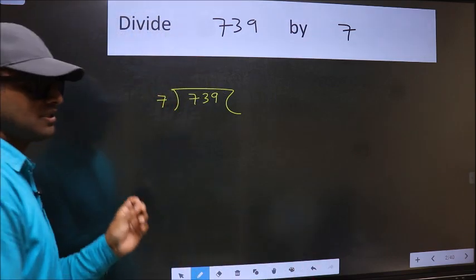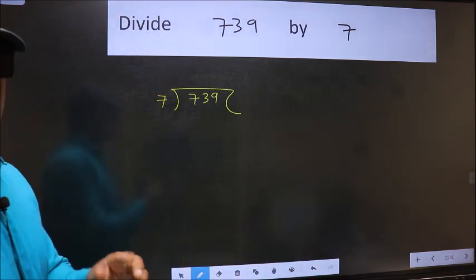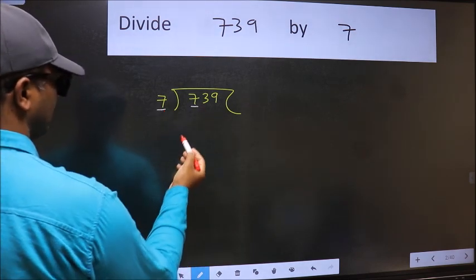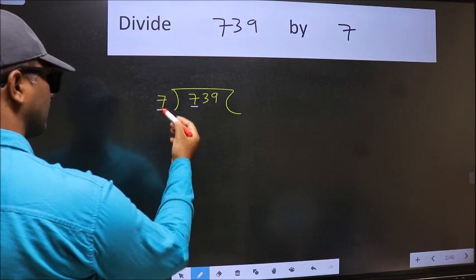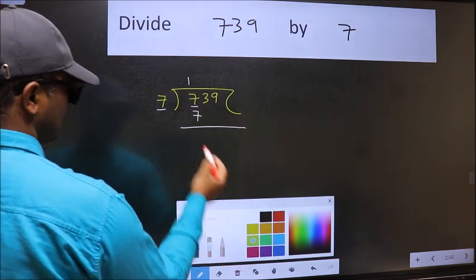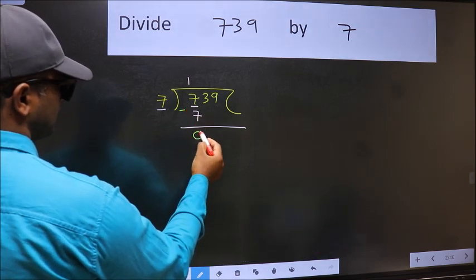This is your step 1. Next, here we have 7 and 7 here. When do we get 7 in the 7 table? 7 once is 7. Now we should subtract. We get 0.